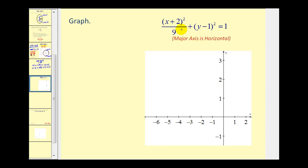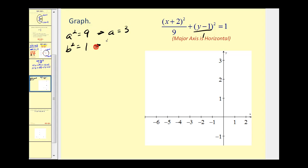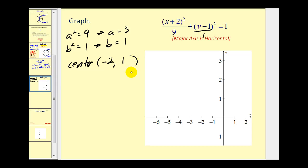Let's look at one more example. This equation is in standard form, but it looks a little different because the y part does not have a denominator — we can just put this over one. Notice the larger denominator is under the x part, so we have a horizontal major axis. We can conclude that a squared equals nine and b squared equals one, so a equals three and b equals one. The center: if it's x plus two, the x coordinate is negative two; if it's y minus one, the y coordinate is positive one.